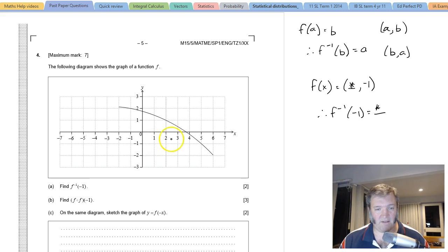It's pretty easy to see that the x coordinate that maps onto negative 1 is 5. So for your working, you might want to put something like: there's the point (5, -1). You can write some lines like: since f contains (5, -1).